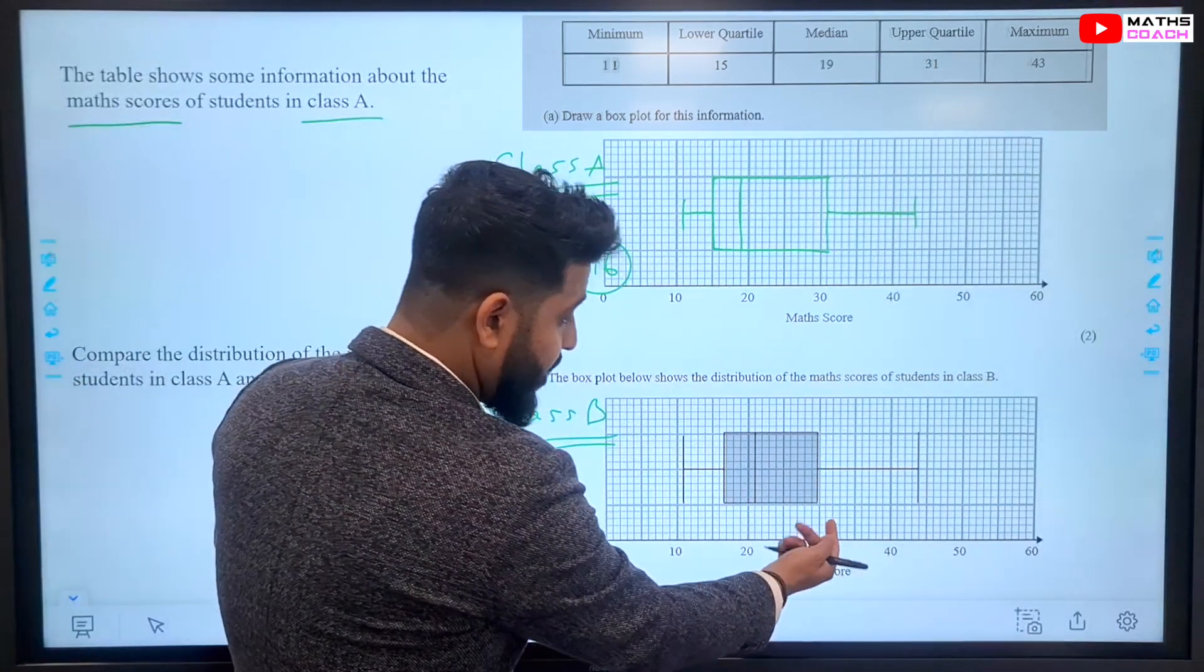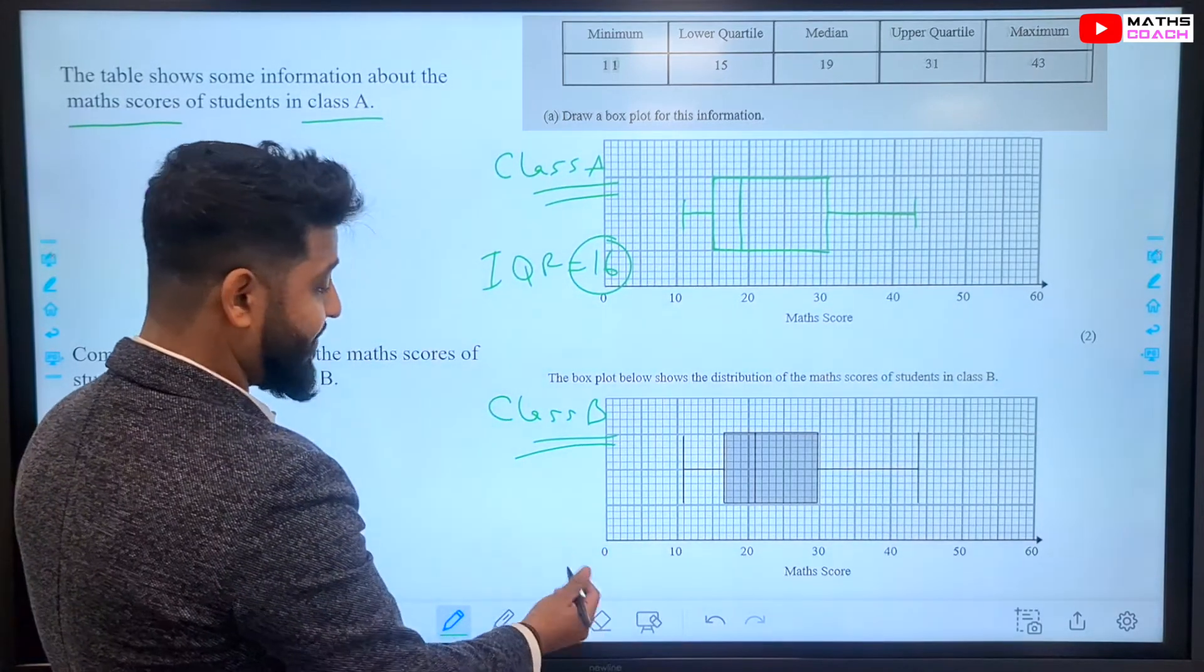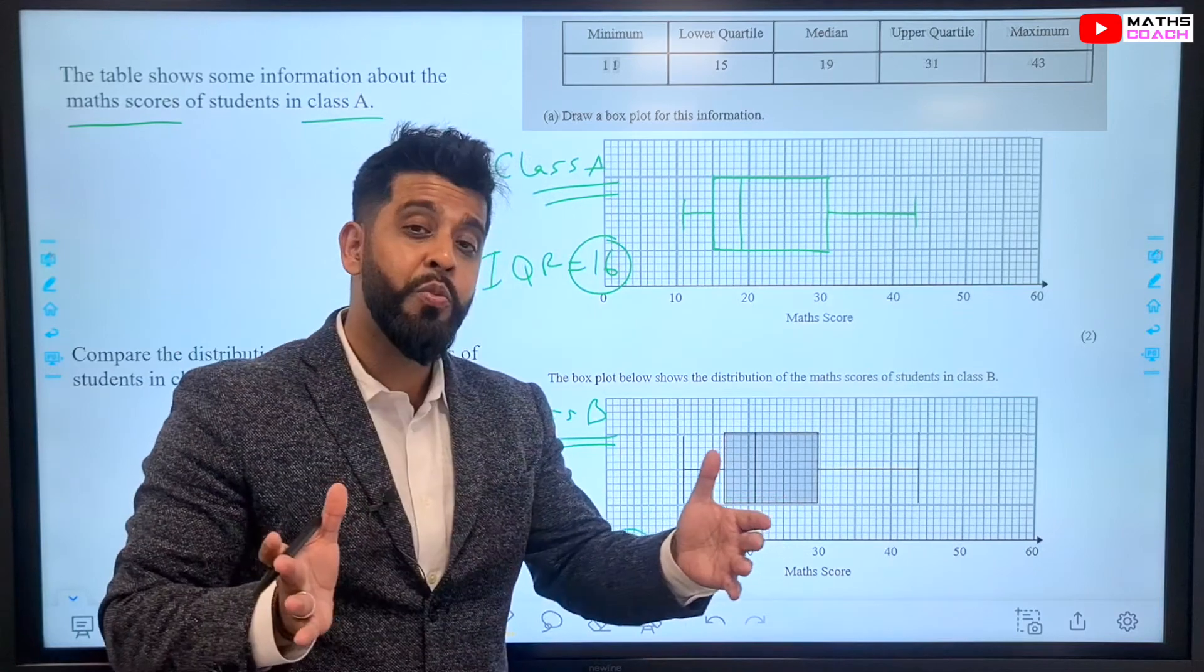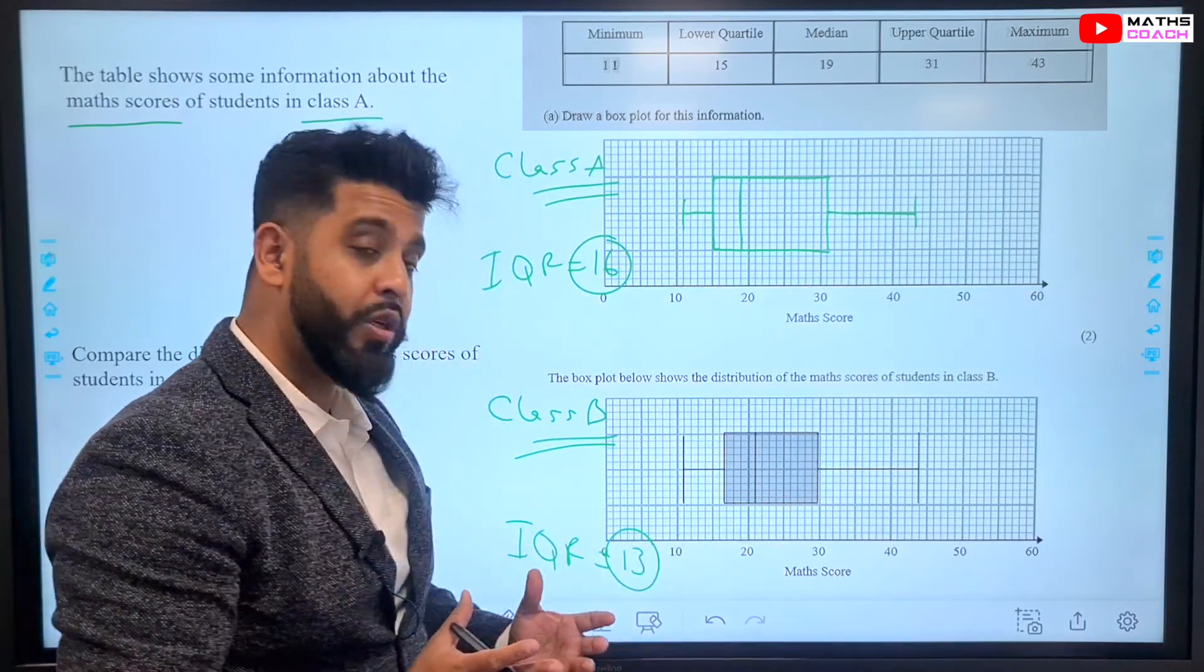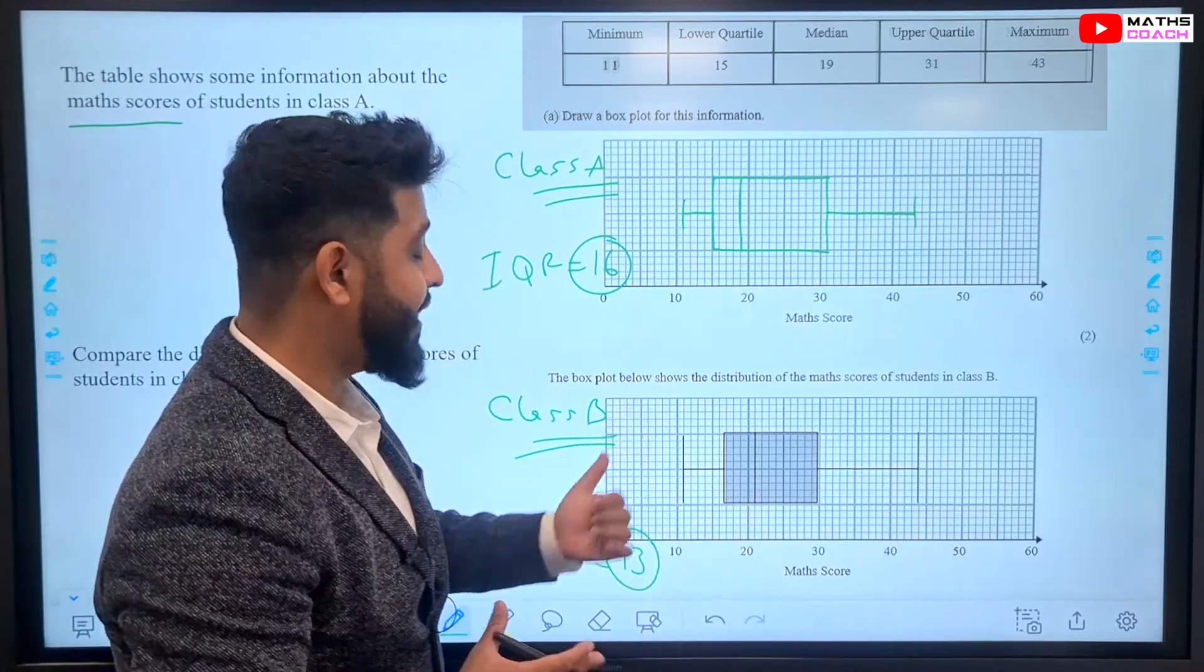And if you look at this one, you can estimate 30 minus 17. So, 30 minus 17, the IQR of this one is 13. So, it's got a smaller range for the interquartile range, which shows more consistency between the students in Class B.